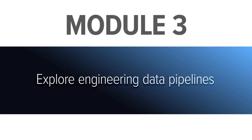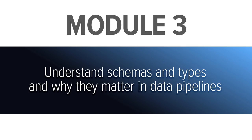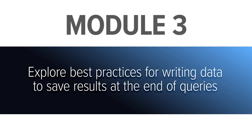In module 3, we'll explore engineering data pipelines. This allows us to go under the hood with how Spark clusters connect to databases using the JDBC protocol, a common way of connecting to databases in Java environments. We'll show you schemas and types and why they matter in data pipelines. Certain file formats work well in distributed environments and certain file formats don't, and we'll discuss some of those trade-offs. Finally, we'll explore best practices for writing data to save the results at the end of our queries.